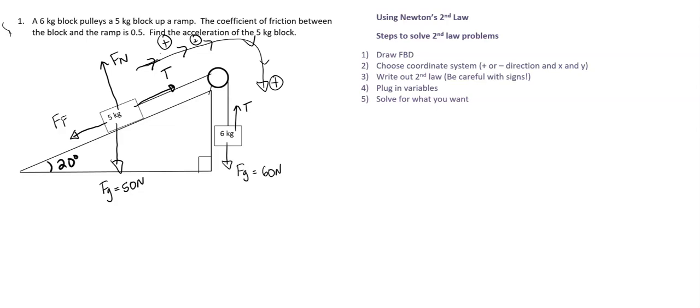And then down for the 6 kilogram block is the positive direction. So any forces that are along the direction of the rope, so along this direction, are considered the X direction. Okay. So now let's go ahead. So we did our coordinates.